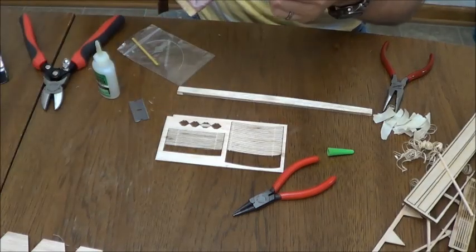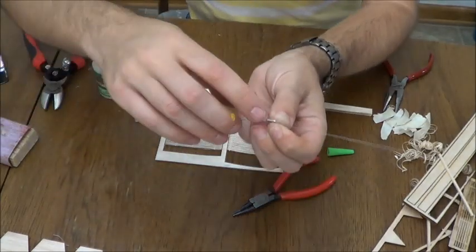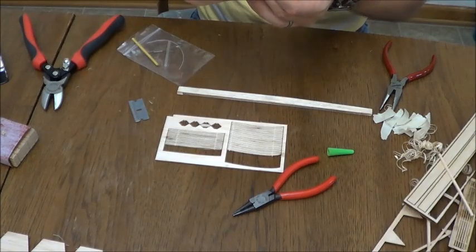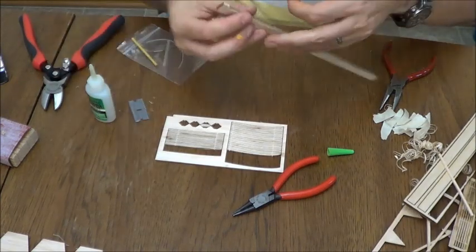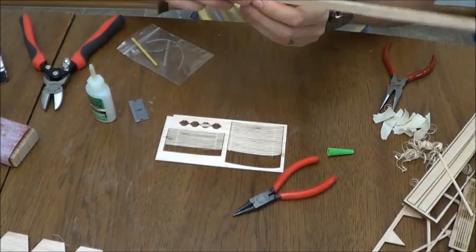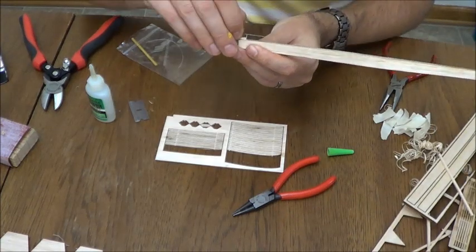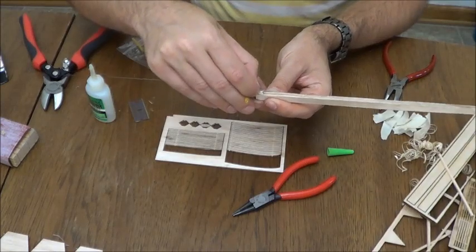sand the top of this guy a little bit. You can see it kind of removes the shine up there, gives you a better gluing surface. I'm going to put glue on top of that and now I'm going to take this propeller bearing and we're going to mount it. And the reason we've got the wire in it is we want to set this so we have some left thrust.